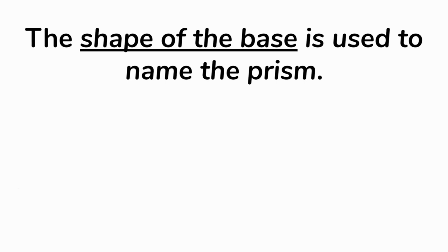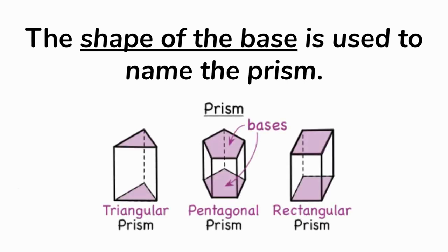Looking at those example prisms: on the left, we have a triangular prism, because both bases are triangles. In the middle, we have a pentagonal prism, because both bases are pentagons. On the right, we have a rectangular prism, because the bases are both rectangles. The parts that aren't highlighted — the white parts — those are the faces, the sides. A triangular prism has three faces. A pentagonal prism has five faces. A rectangular prism has four faces, because a rectangle is a quadrilateral.